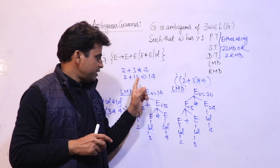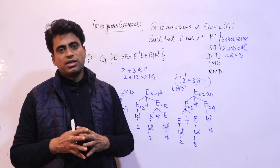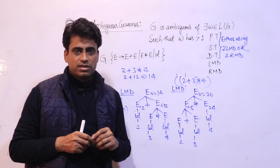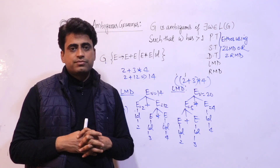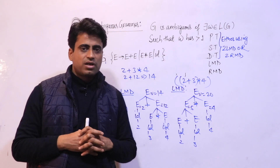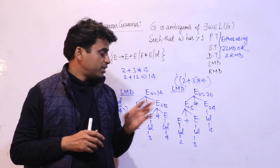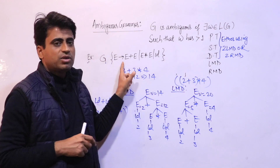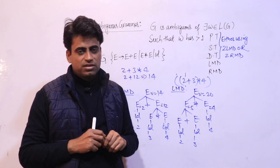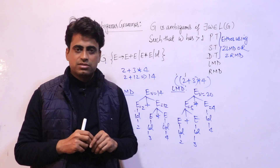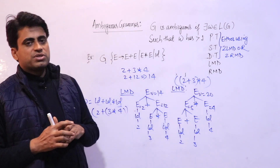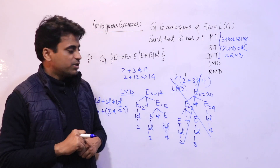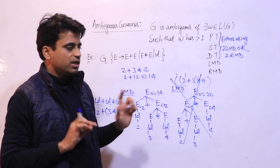Imagine a computer sometimes evaluating this expression as 14 and sometimes as 20 — it is inconsistency, it is a blunder. This problem arises because more than one parse tree is being generated, meaning this grammar is ambiguous. Ambiguous grammar is not good. Grammar should be unambiguous. If we make this grammar unambiguous, only one parse tree will be constructed — always — and there will be only one answer.